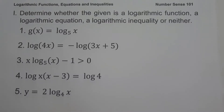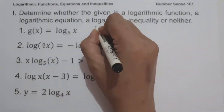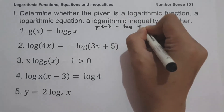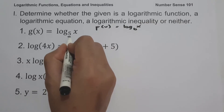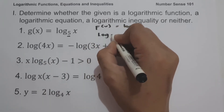On the given set of examples, determine whether the given is a logarithmic function, a logarithmic equation, a logarithmic inequality, or neither. On number 1, g(x) = log_5(x). Since our given is written in the form f(x) = log_b(x) where b is greater than 0 and not equal to 1, therefore, this one is a logarithmic function.